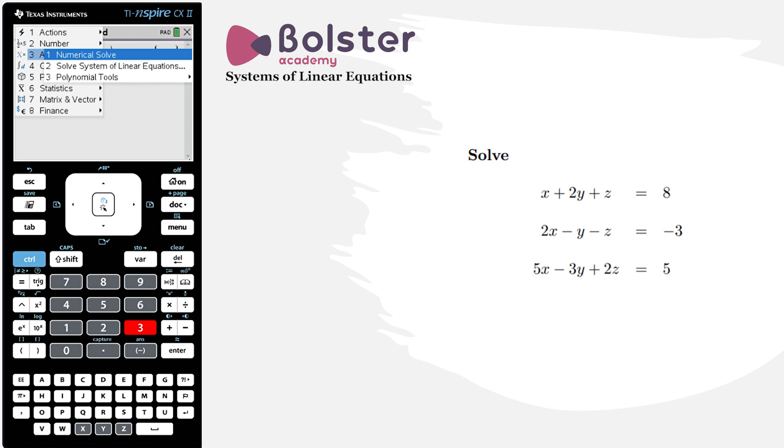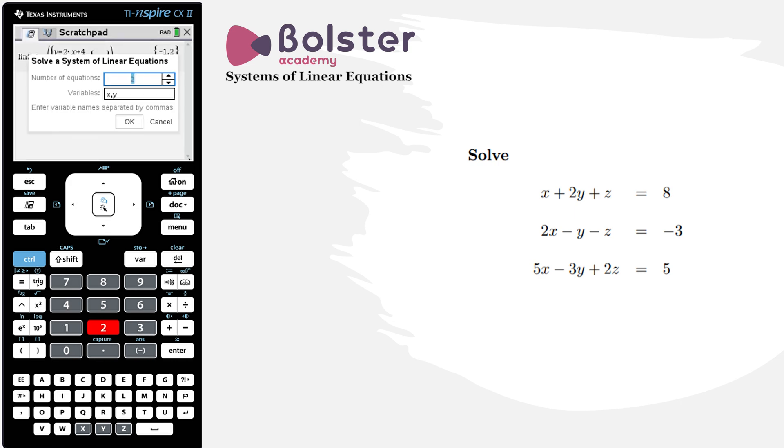And option number 2, solve system of linear equations. Now here I just need to put in the number of equations, so in this case it's 3. I hit tab and I have to put in the variables that I'm solving for, but we don't need to change anything because our equations are in variables x, y, and z. So if I hit enter it pops my input area that I need to fill in.